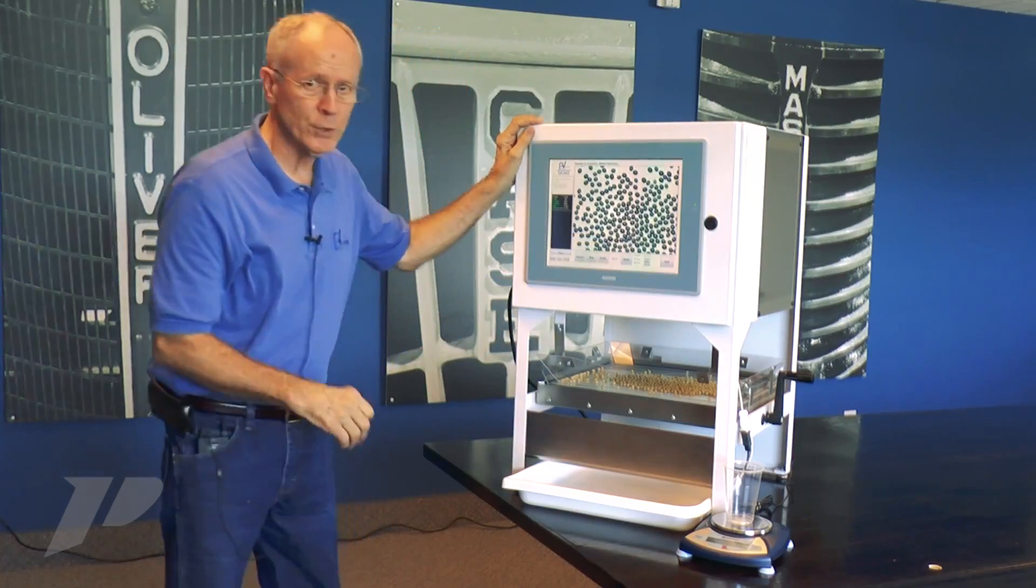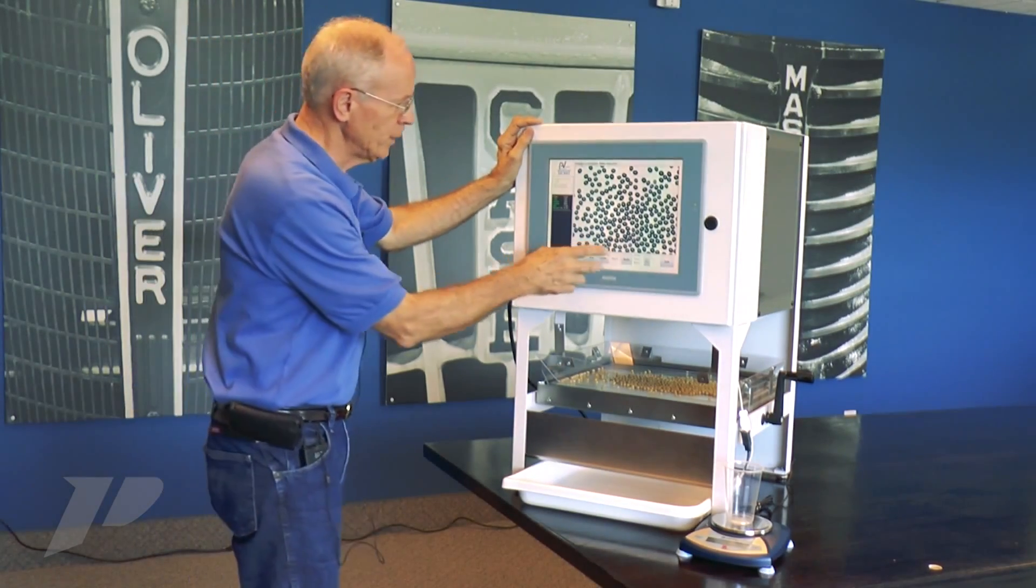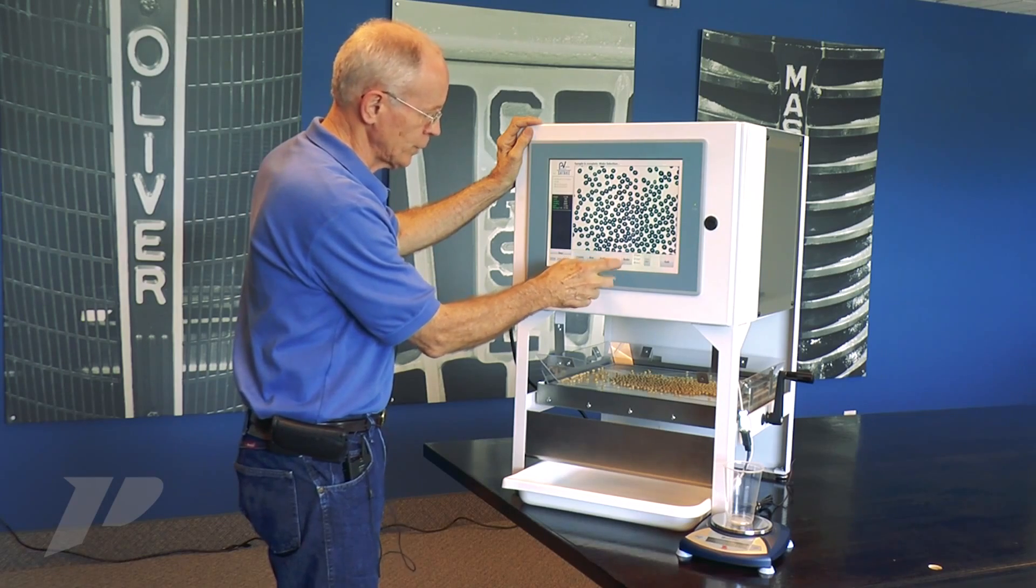We call that visual verification. We don't have to go back and count the product. We don't have to wonder whether it's right or not. We know that every seed has a green dot. We know the computer saw it as a single and counted it that way.